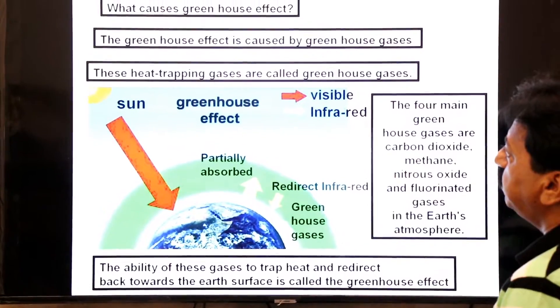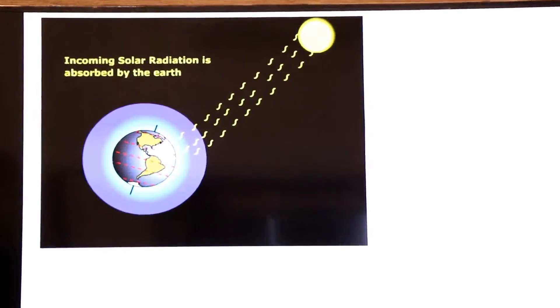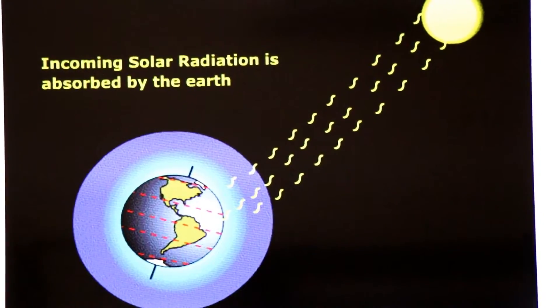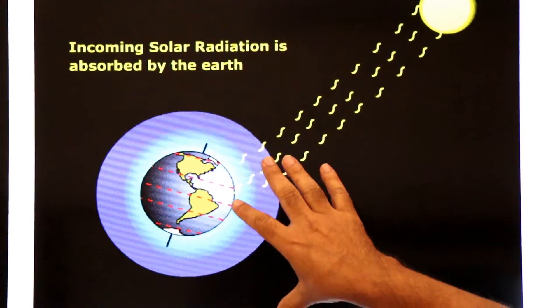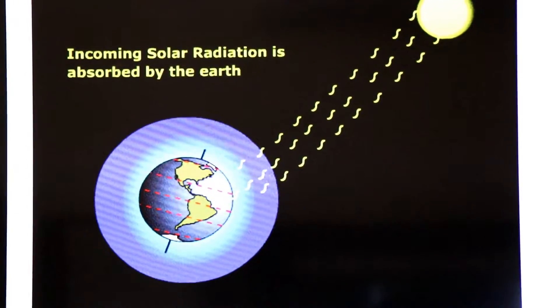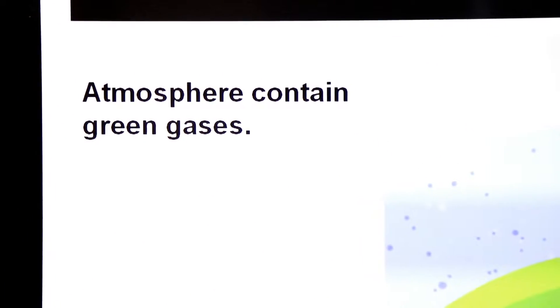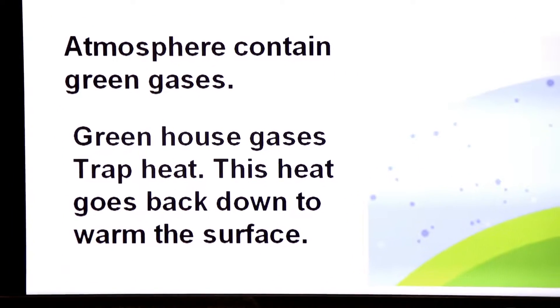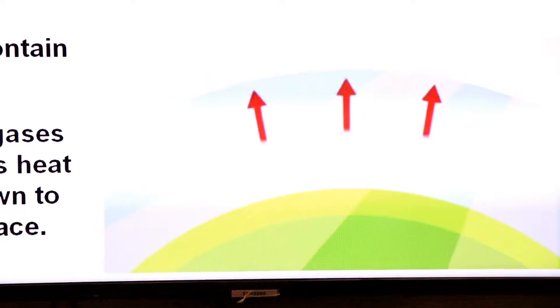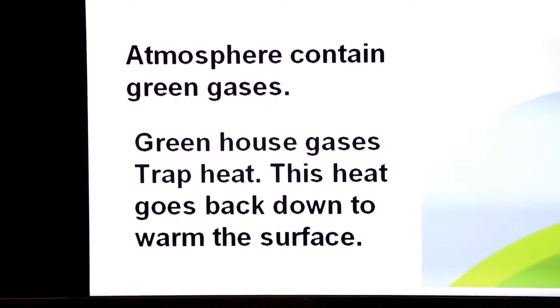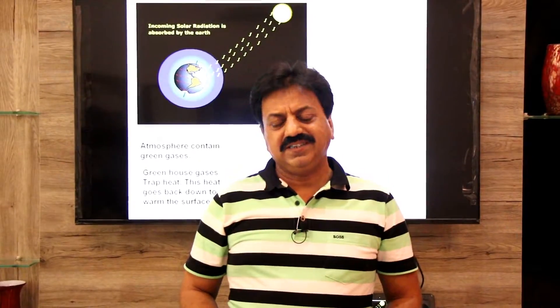Incoming solar radiation is absorbed by the earth, heating it up. Greenhouse gases in the atmosphere — including carbon dioxide and methane — trap heat and send it back down, warming the earth's surface. This effect is called the greenhouse effect, also called global warming.